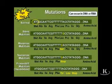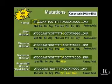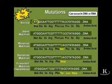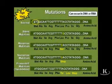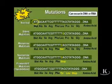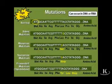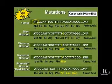The first triplet in the DNA or corresponding RNA is going to correspond to methionine. Methionine is always the first amino acid in a newly synthesized protein.